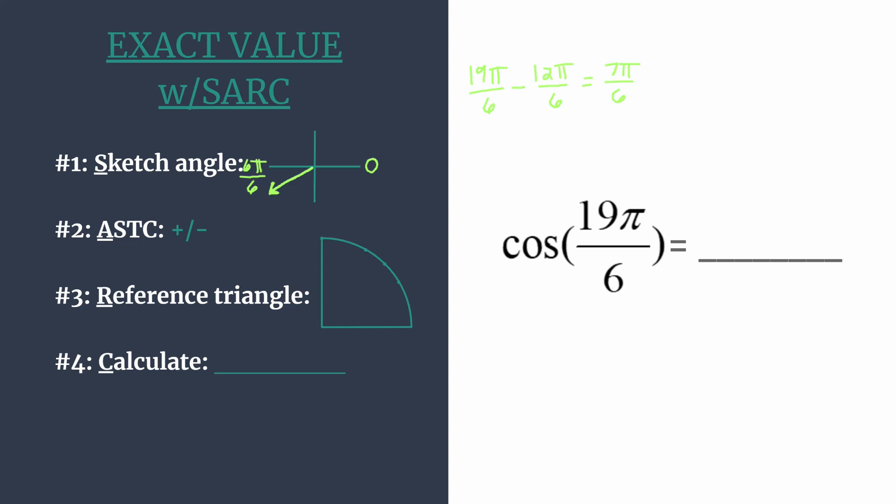Okay, now that we have our angle sketched, we can use ASTC. Think all students take classes. And you use that acronym to work your way around from quadrant 1 to quadrant 4. And it tells you which trig functions are positive in each of these quadrants. So they're all positive in quadrant 1. Sine and cosecant are positive in 2. Tangent and cotangent are positive in 3. And cosine and secant are positive in 4. So let's go back to quadrant 3. That's where our angle's terminal side is. Okay, so only tangent and cotangent will be positive in quadrant 3. And since we're trying to find the cosine of 19 pi over 6, our final answer must be negative.